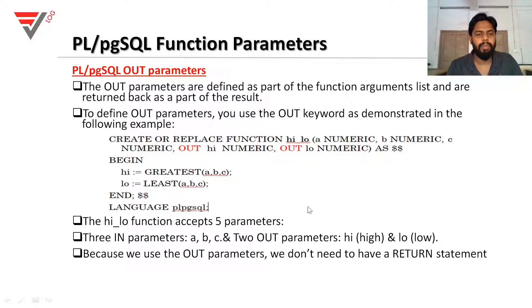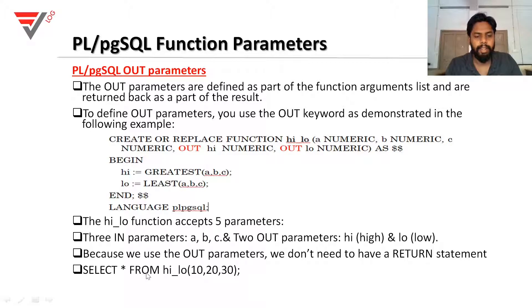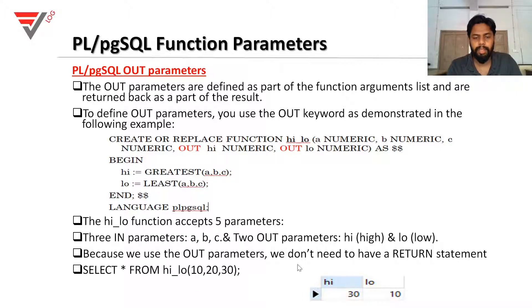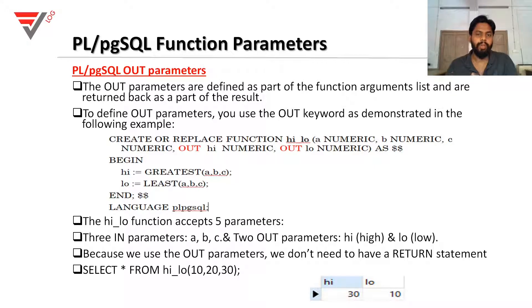The return statement is not needed here. The OUT parameter is the result of the function. For example, calling SELECT * FROM high_low(10, 20, 30) — three values passed to IN parameters A, B, C. The result: HIGH is 30, LOW is 10. It is automatic — there is no explicit return statement. The OUT parameters carry the result. This is the advantage of OUT parameters in PL/pgSQL.